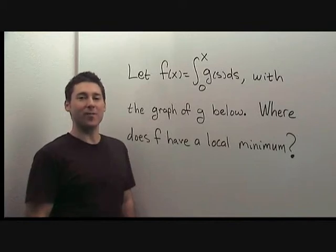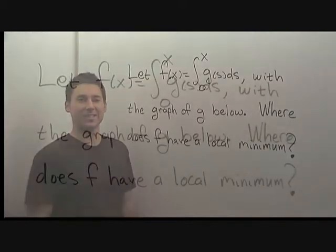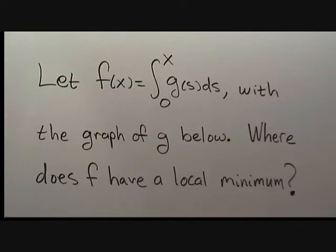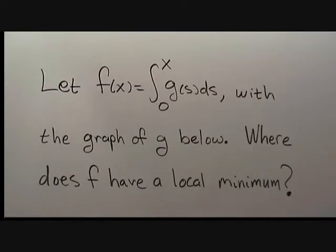This problem is about using the fundamental theorem of calculus and reading information from the graph of a function. Let f of x equal the integral from 0 to x of g of s ds with the graph of g below. Where does f have a local minimum?